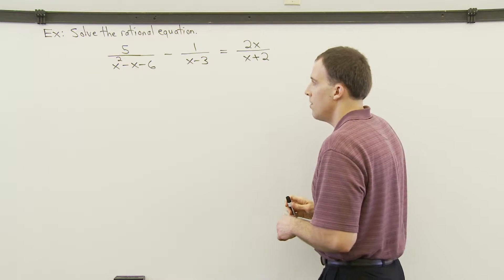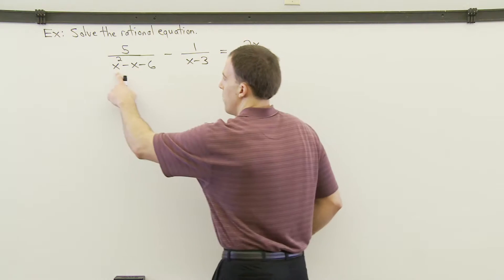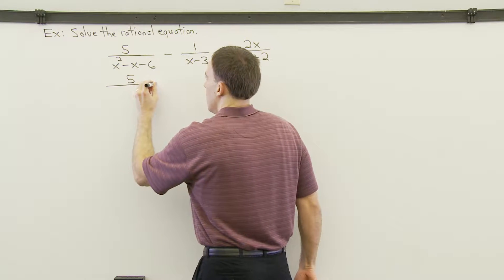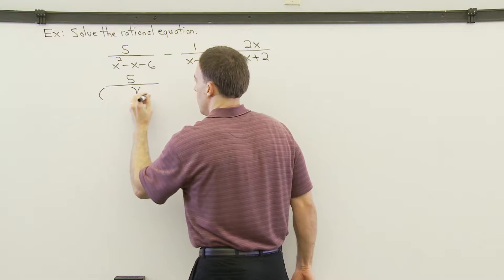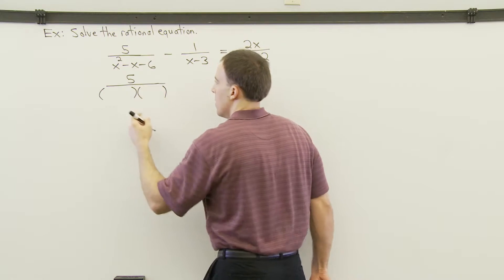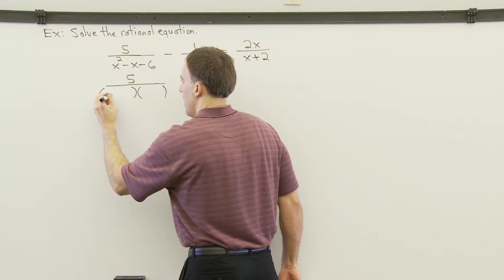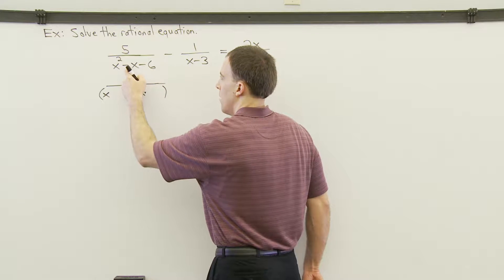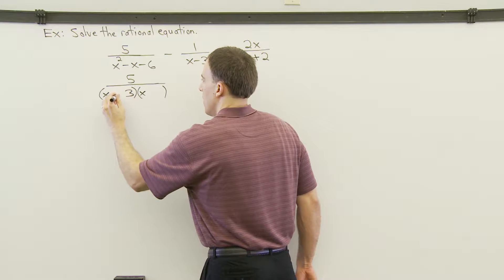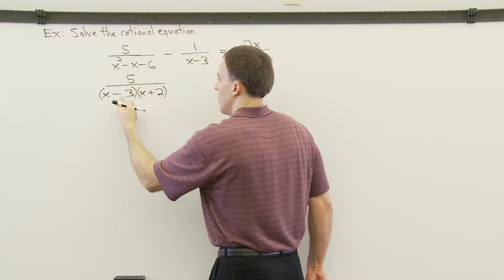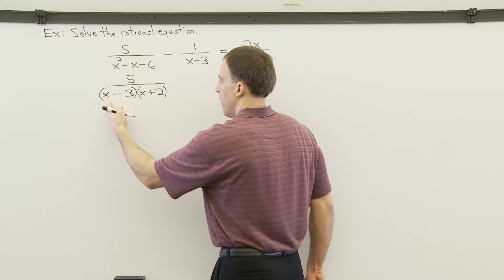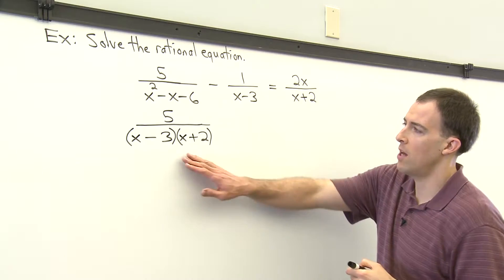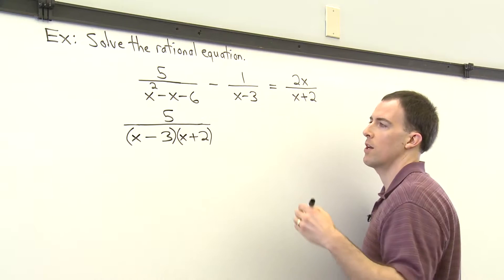The very first thing we need to do is to get all denominators factored completely, and we have a trinomial in the first denominator which needs to be factored. I'm going to try to factor the first denominator: 5 over — x times x gives x squared. What times what multiplies to give us 6 and also adds up to negative 1? That could be negative 3 and positive 2. We get negative 6, and we have positive 2x and negative 3x, which adds up to negative x. So the first denominator is now factored as x minus 3 times x plus 2.